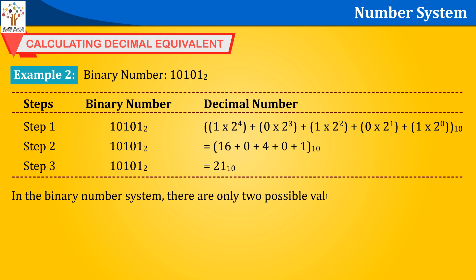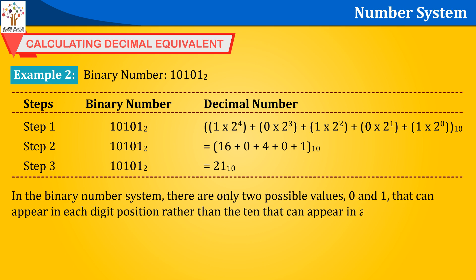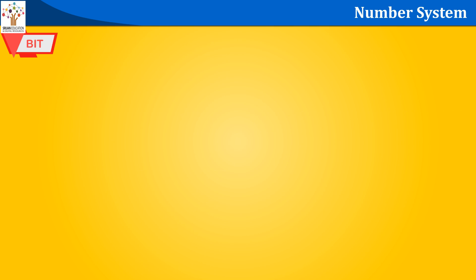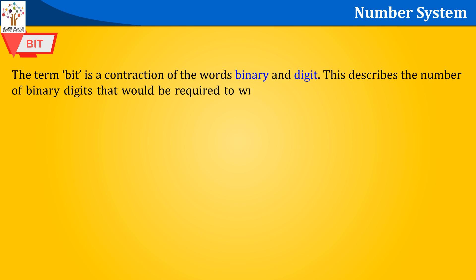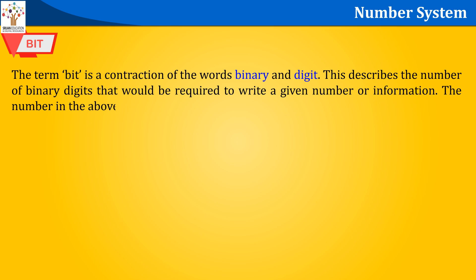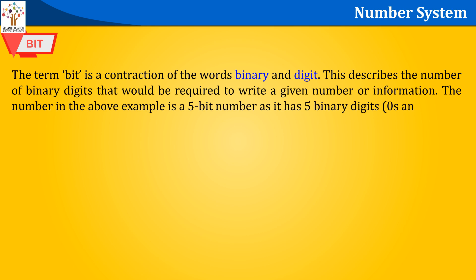In the binary number system, there are only two possible values — 0 and 1 — that can appear in each digit position, rather than the 10 that can appear in a decimal number. The term 'bit' is a contraction of the words 'binary' and 'digit.' This describes the number of binary digits required to write a given number or piece of information.